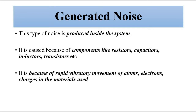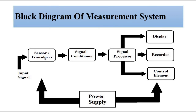The sensors and transducers we use can be of different types — resistive, capacitive, inductive, or other operating principles. They are also a source of generated noise because of the components or elements used. Different signal conditioning techniques are also used, such as Wheatstone bridge, voltage divider, AC bridges, and other techniques. Depending on the elements and components used in that subsystem, generated noise can also be produced.